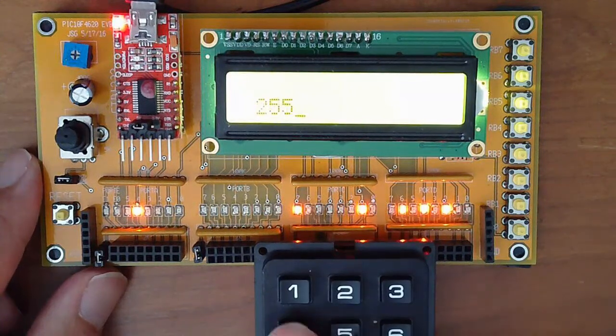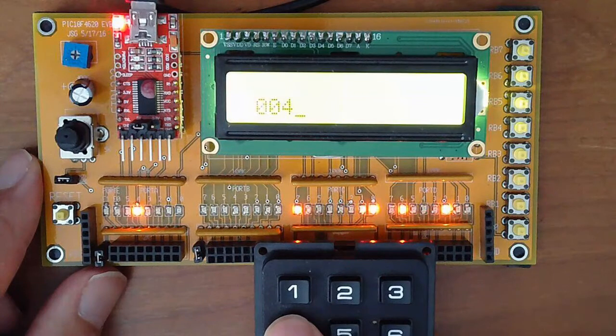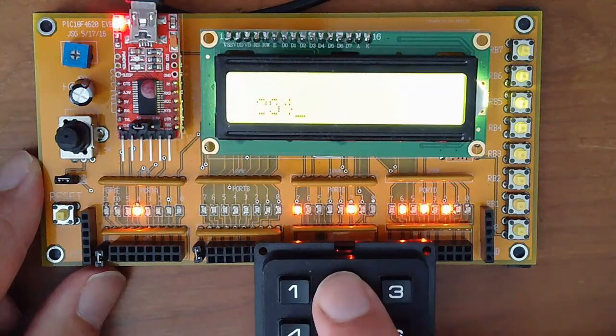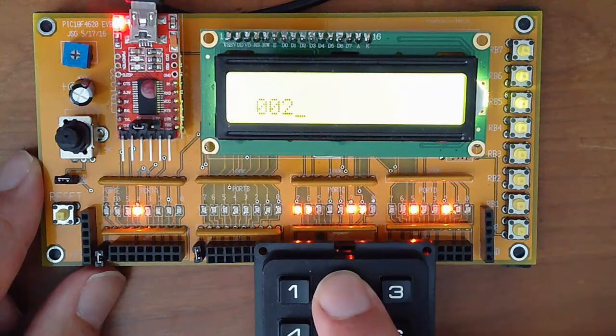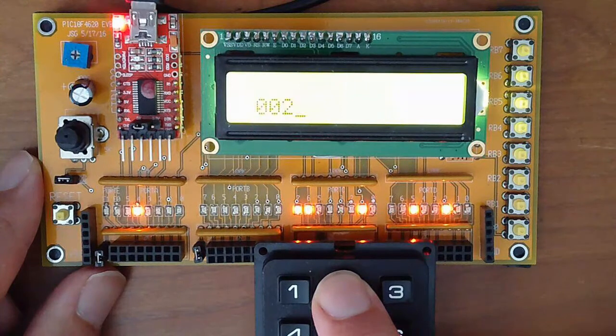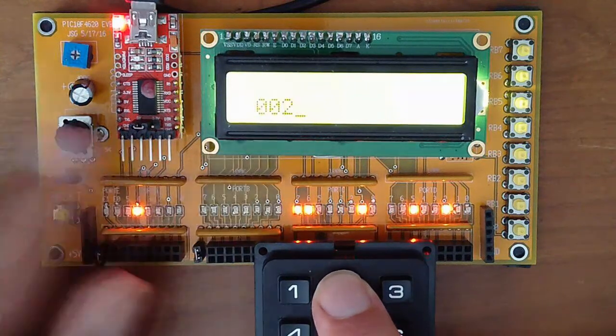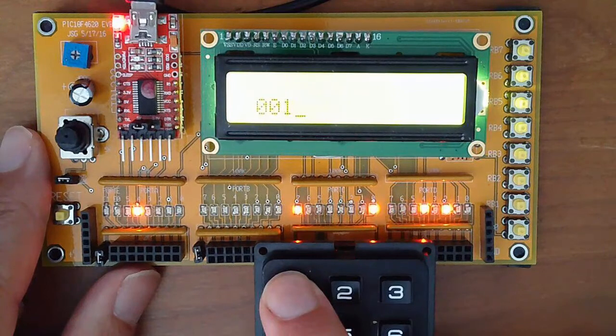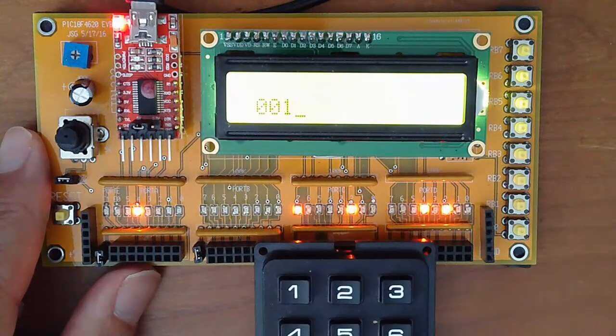When column 2 is being checked, that turns on. I'll hold down the 2 button, then the first row, second column turns on. And on the LCD display, I can see that that is the 2. This is a 1. I press no key, it returns 255.